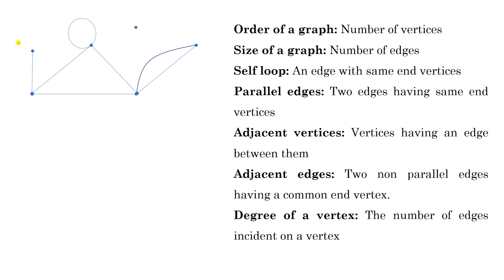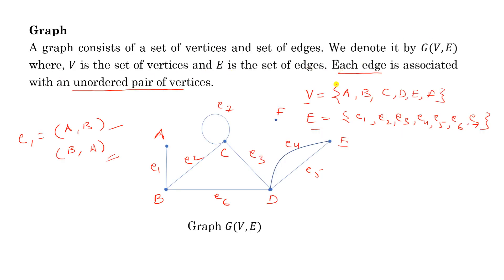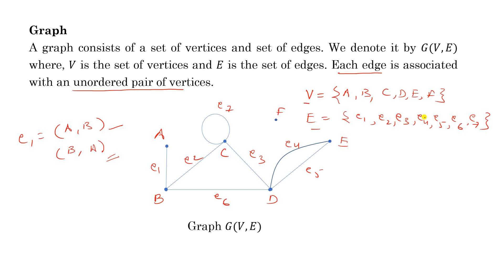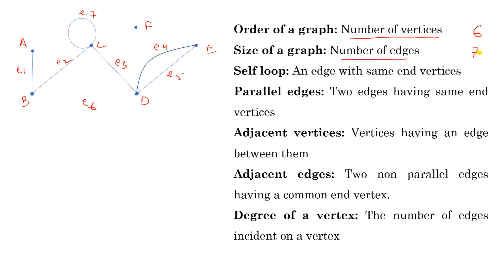Now some other definitions in graph theory. The order of the graph is the number of vertices in the graph. Here the number of vertices is 6, so the order of the graph is 6. The size of the graph is the number of edges — this is the cardinality of E, which is 7 here, so the size is 7.